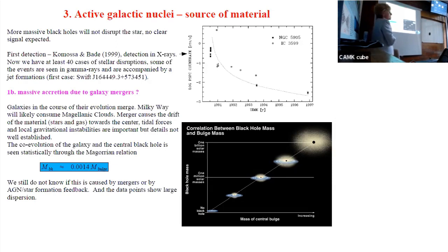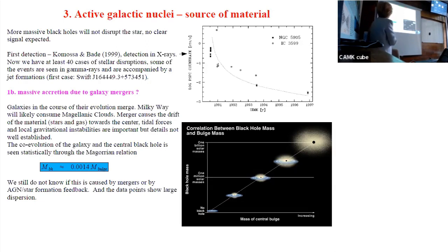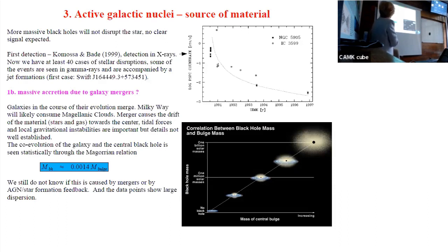Tidal disruptions do happen from time to time — we now know at least 40 cases. In some cases, detection was done in X-rays because the material was quite hot; in some cases, even gamma-ray emission was seen from such disruptions because a jet temporarily forms. But this event lasts a year — you can support activity for a year or so, but not for a quasar, which needs consistently high accretion rates.